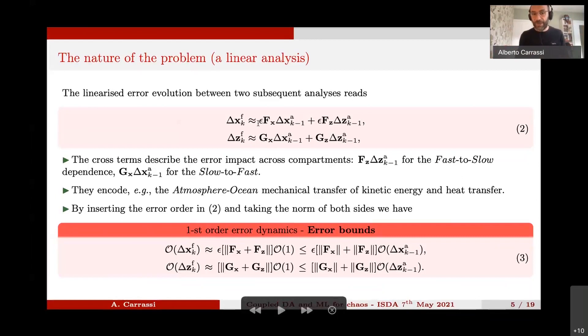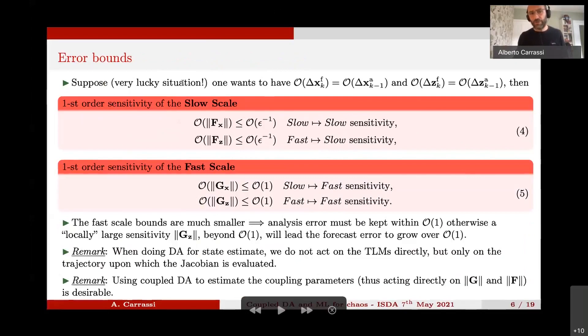Now, if we take this system and we apply a simple linearization analysis, these are the equations that look like this will be the linearized evolution of the error where you see clearly the appearance of the cross term. So the cross term indeed will describe the impact across compartment. For instance, this term here will be the fast to slow dependence, and conversely, this term here will be the slow to fast dependence. Now, in the practical case, this Jacobian here will encode all of the atmosphere in the case of an atmospheric-ocean coupled model will encode all of the mechanical transfer of kinetic energy transfer and so on. Now, we can use this equation to have a sort of approximation view on the error bounds.